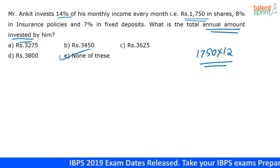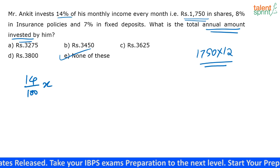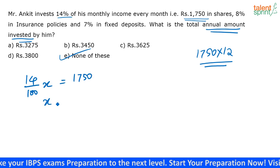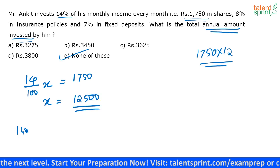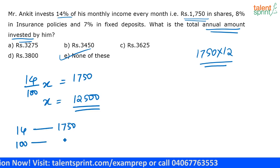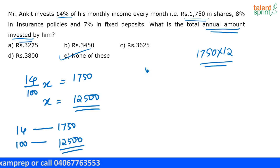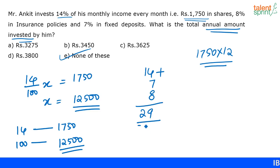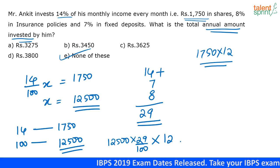So the answer is option E — none of these. But if the options are confusing with big values, here is how you solve it. Let his monthly salary be X. Since 14% equals Rs.1750, X equals 1750 by 14, that is Rs.12,500. Out of this monthly salary he is investing 14% in shares, plus 8% in insurance, plus 7% in fixed deposits — totally 29% of his salary every month. So 12,500 into 29 by 100 gives the monthly investment, and multiplying by 12 gives the annual investment.